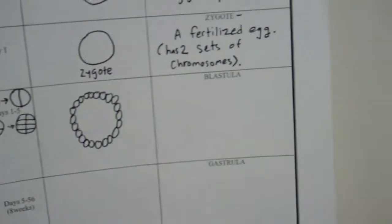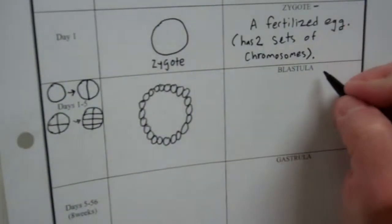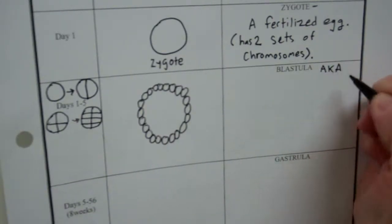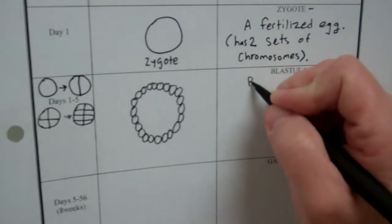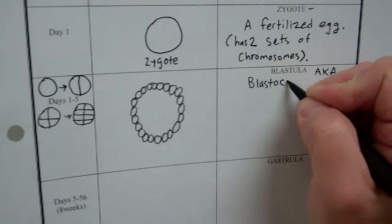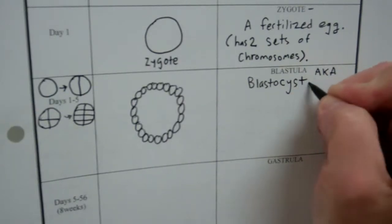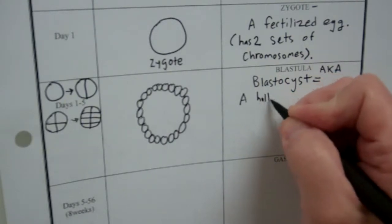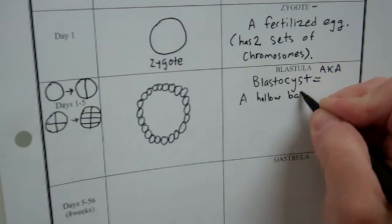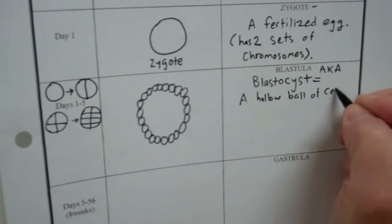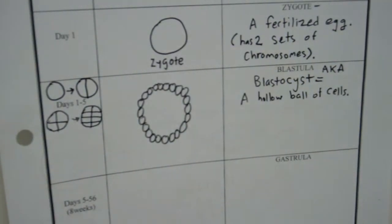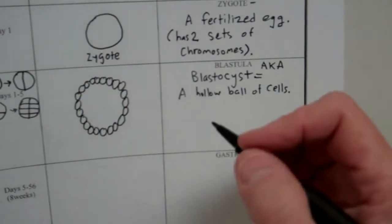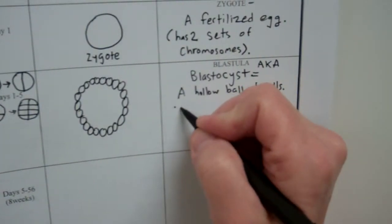Now our textbook calls it a blastocyst. So blastula, a.k.a., also known as a blastocyst. A blastocyst is a hollow ball of cells. Now, this hollow ball of cells, a couple things about it. All the cells are identical.